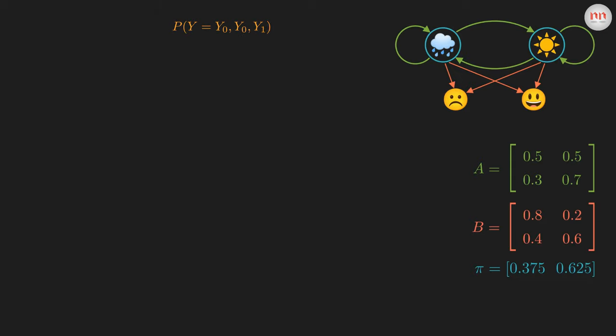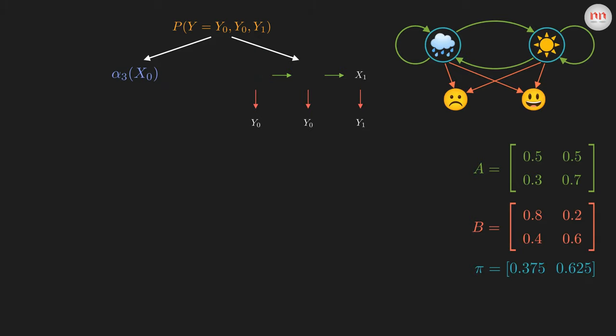This is the thing we are trying to find. The key point in dynamic programming is to divide a big problem into sub-problems. We can divide this into two cases. In the first one, we are taking the sequences ending with x0, and in the second one, we are taking the sequences ending with x1. Notice that I have left the first two places blank. That means on the left we are considering all possible sequences of length 3 ending with x0, and on the right, sequences ending with x1. For a moment, imagine that we know the probabilities corresponding to these two cases. We are going to denote the probabilities using alpha. The subscript of alpha denotes the length of the sequence, and the subscript of x is for different states. So we can find our answer just by adding these two cases.